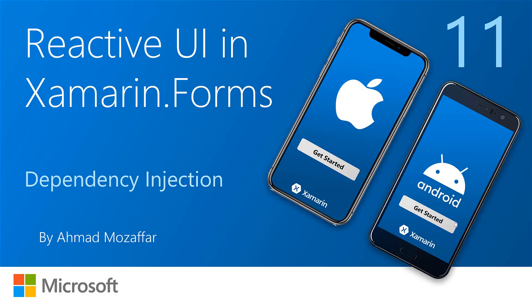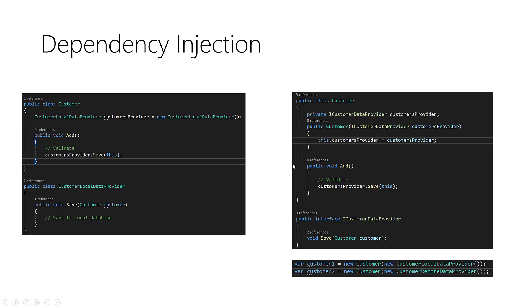Hello everyone and welcome back to MVVM Reactive UI and Xamarin Forms with another new session. It's dependency injection, one of the most interesting and cool topics in modern programming - not only in MVVM and Xamarin Forms. Dependency injection is a programming principle where you write decoupled classes. Here we have a class that depends on another class - this is standard code, and this is code following dependency injection.